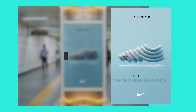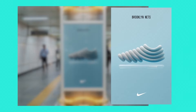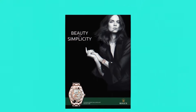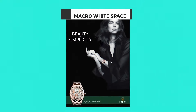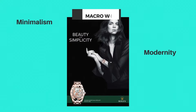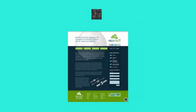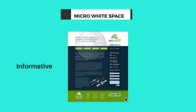Having lots of macro white space will create emphasis and hierarchy on the focal point, making the design more noticeable. One rule of thumb is that more macro white space can suggest minimalism, modernity, and luxury, while if the balance is shifted more to micro white space, the design can be seen as more informative and serious.